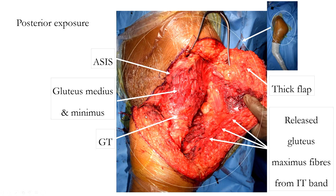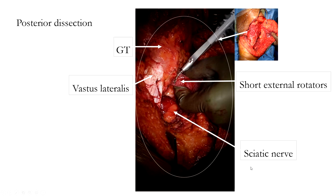For the posterior approach, a thick flap was retained to minimise wound dehiscence and necrosis. Some fibres of the gluteus maximus along with the inferior gluteal vessels were retained with the flap. Once the posterior flap was elevated, the anterior superior iliac spine and the gluteus medius and minimus muscles arising from the ilium and attaching to the greater trochanter were identified. Posteriorly, the gluteus maximus fibres were released off the IT band. Dissection was continued by resecting the short external rotators as close to the pelvis as possible to protect the underlying sciatic nerve.